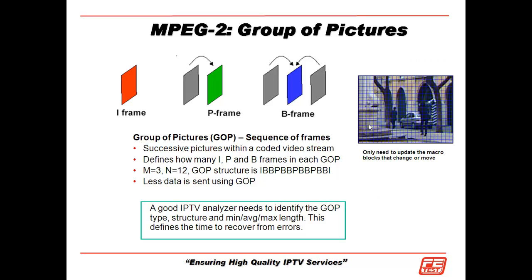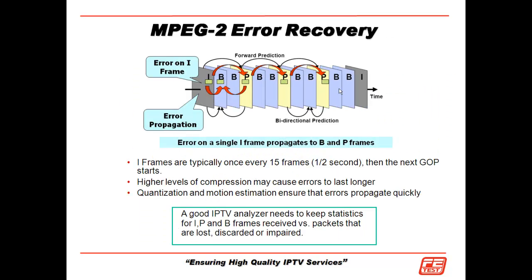We now introduce the concept of Group of Pictures. All this is is taking these I-frames, P and B frames, and putting them in a sequence called a GOP — Group of Pictures. A good IPTV analyzer needs to identify the GOP type structure and length, because this defines the time to recover from errors. If we lose an I-frame, we lose everything in between until we get to the next I-frame. If we lose a B-frame, we only lose that next B-frame. If we lose a P-frame, we lose the two B-frames in between before a new P-frame re-synchronizes us to the video image. So a good IPTV analyzer needs to keep statistics for I, P, and B frames that are received versus those that are lost, discarded, or impaired.